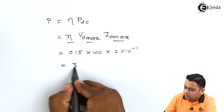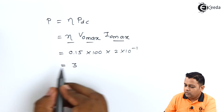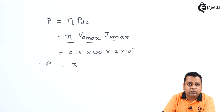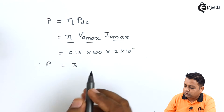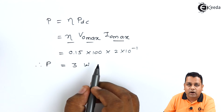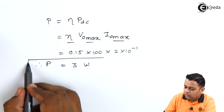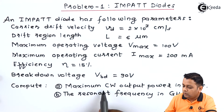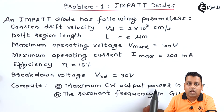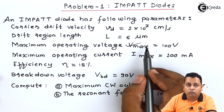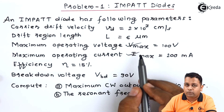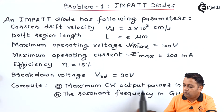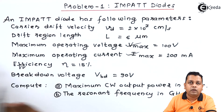The multiplication of the three values results in 3. Since power is measured in watts, the maximum continuous wave output power is 3 watts. This completes Part (a), where we calculated maximum CW output power using the given maximum voltage and maximum current.